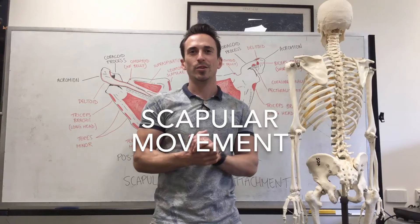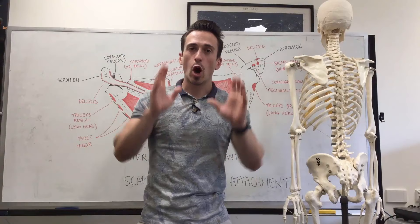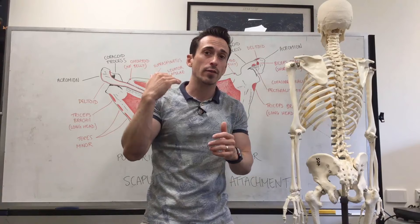Hi everybody, Dr. Mike here. In this video we're going to take a look at scapular movement and the muscles involved. We're only going to look at muscles that have direct attachments to the scapula. We know there are muscles that attach to the clavicle and the humerus that play an important role for scapular movement, but they're not going to be the focus today.